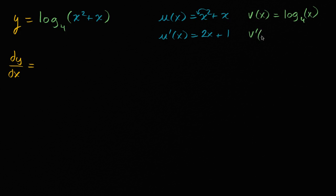And then we've shown in other videos that v prime of x is going to be very similar to if this was log base e or natural log, except we're going to scale it. So it's going to be one over the natural log of four times x.